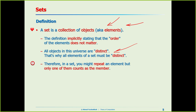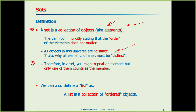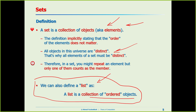This is the definition of a set. On the other hand, we have another structure — a list. A list is a collection of ordered objects. I put this definition here just to be able to compare the set and the list.